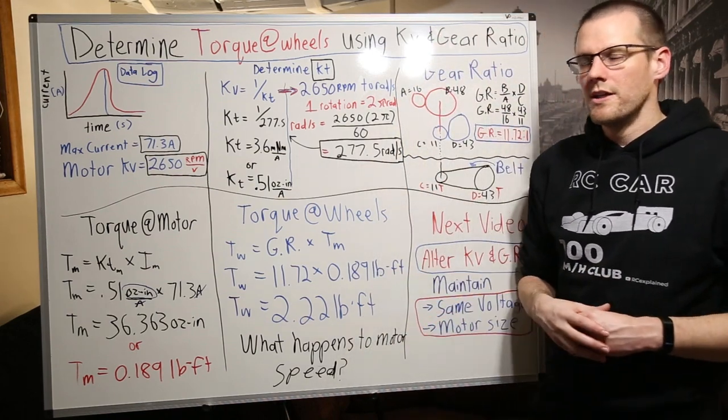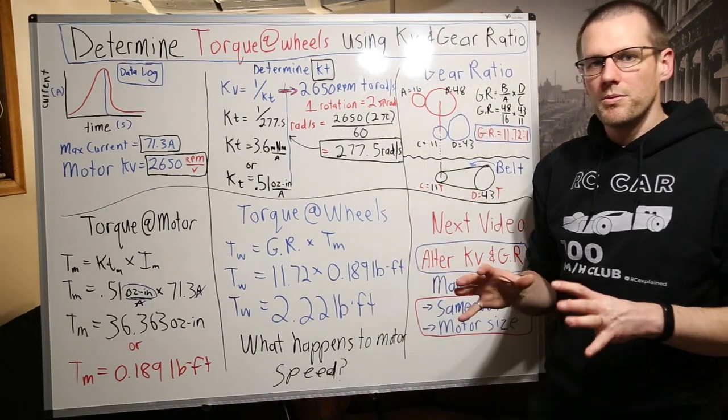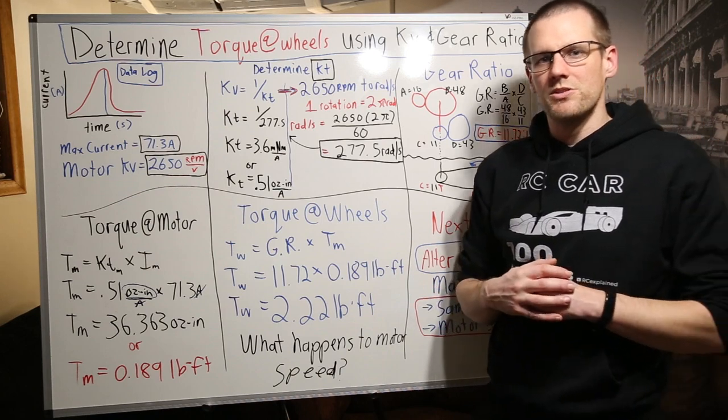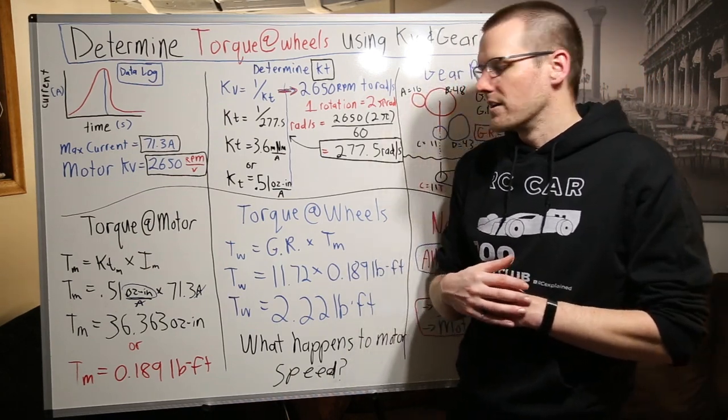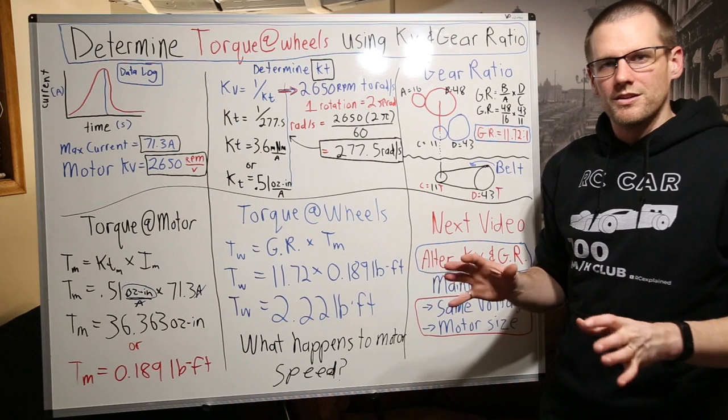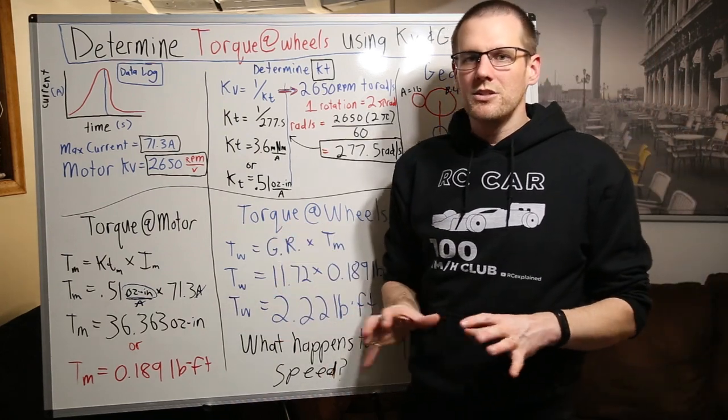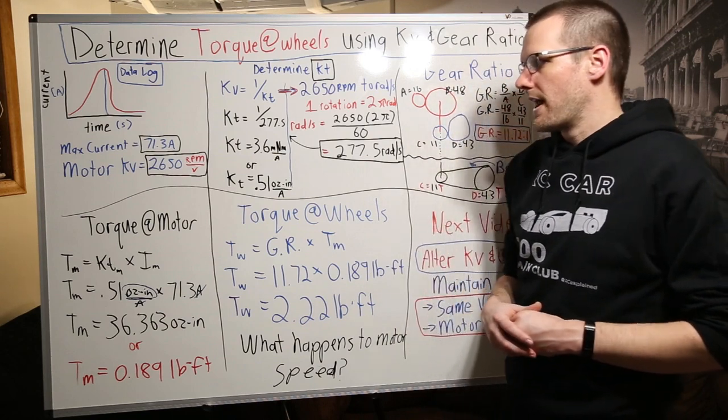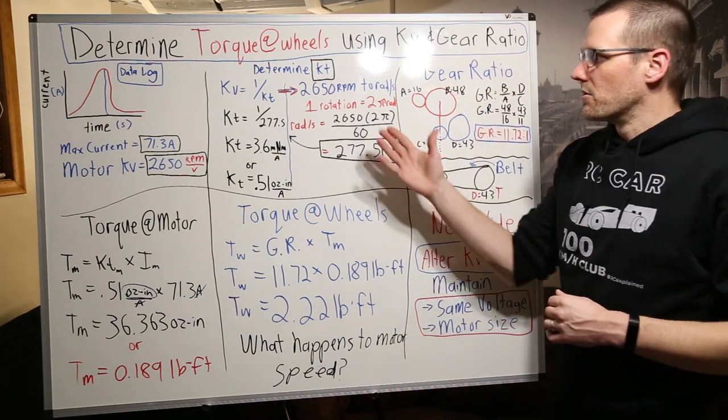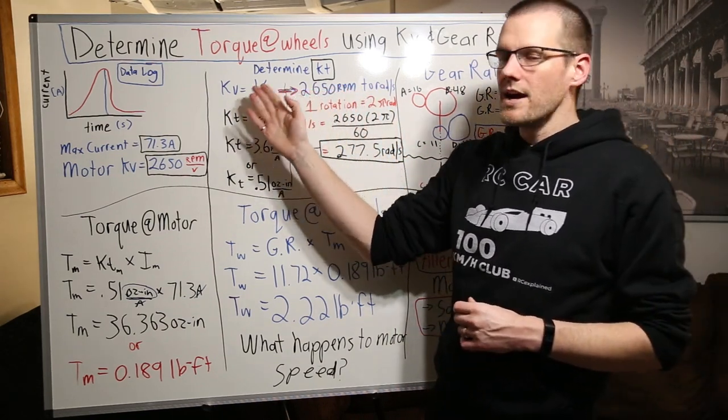Now it's good to also know that this 1.8 scale buggy probably maxes out at around 70 kilometers an hour, which is somewhere in the neighborhood of 40 something miles an hour. So it's not that fast. It's actually one of the slowest vehicles that I have in that scale. So when we go and take a look at our next section here, which is our KT value.